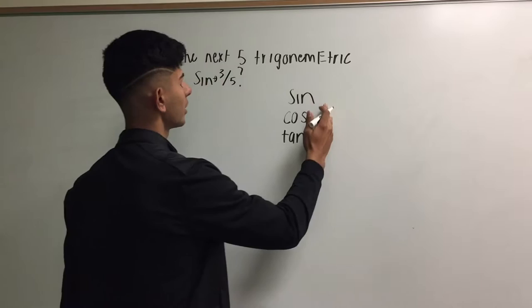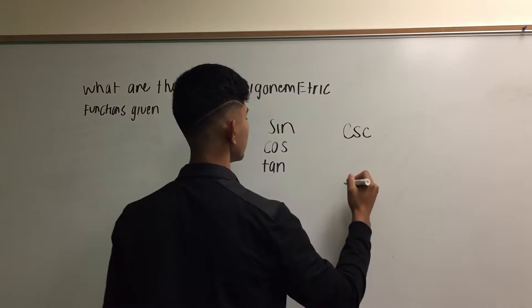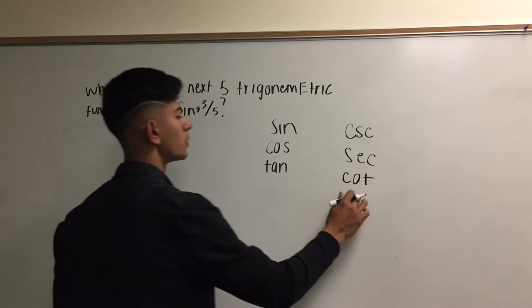You might be wondering what are the other three. It's the opposite of sine, cosine, and tangent. So cosecant for sine, secant for cosine, and cotangent for tangent. Those would be the abbreviations.